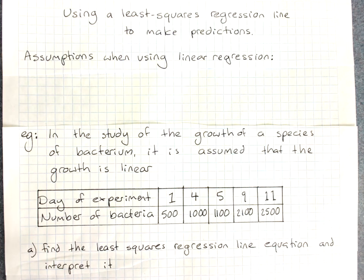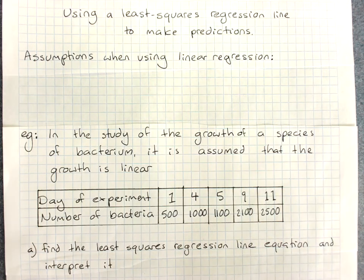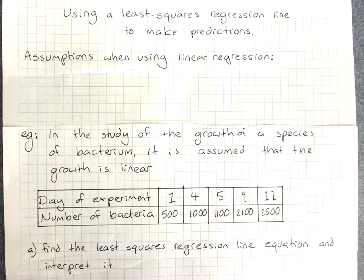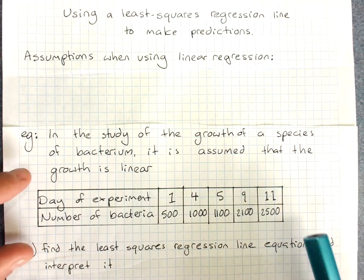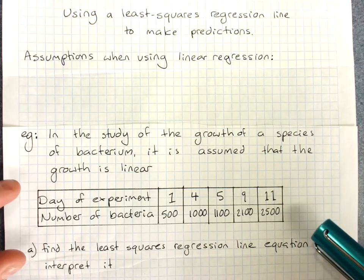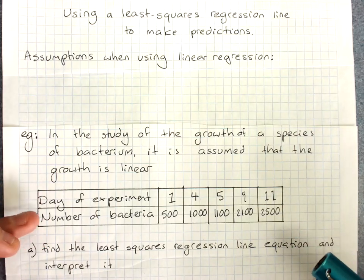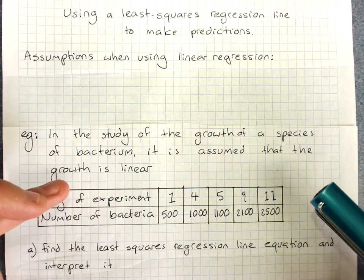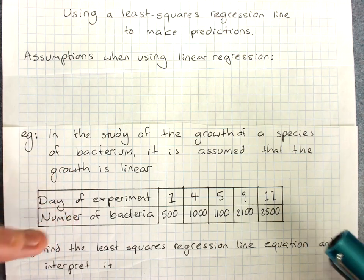Using a least squares regression line to make predictions. So we know how to find a least squares regression line. We now want to be able to use it to make predictions based on our data, because that's the whole point of looking for association between variables, to be able to use the explanatory variable to predict the response variable.